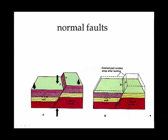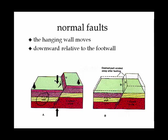Here we have a dip-slip fault. In a normal dip-slip fault, the hanging wall on the left has moved down — that's the definition of a normal fault. It's just relative movement between the two sides. Every normal fault results from tension — that is, the crust is getting pulled apart.